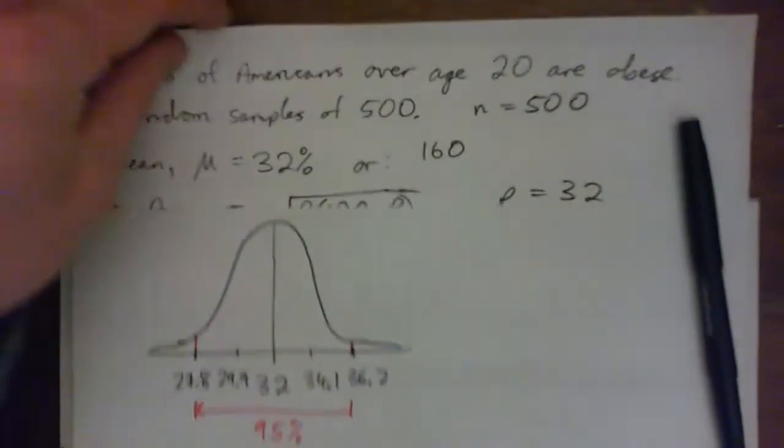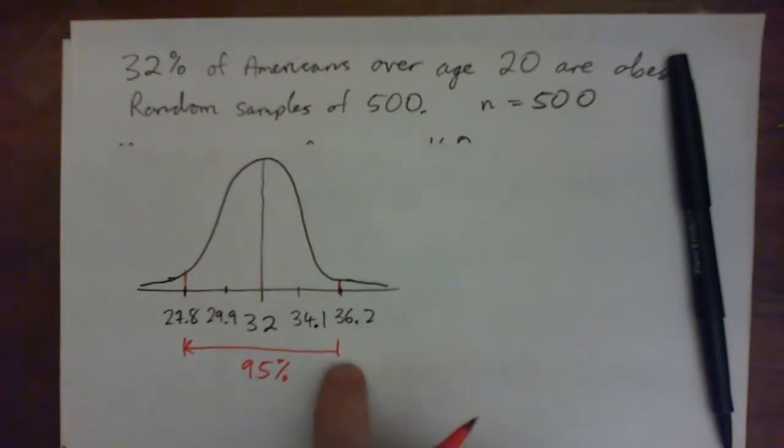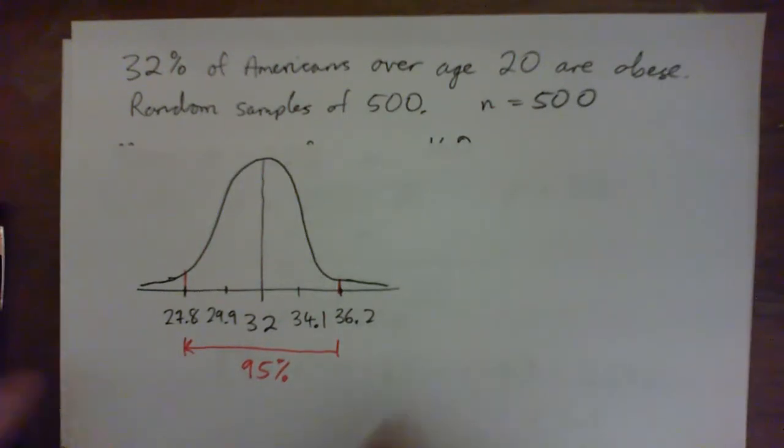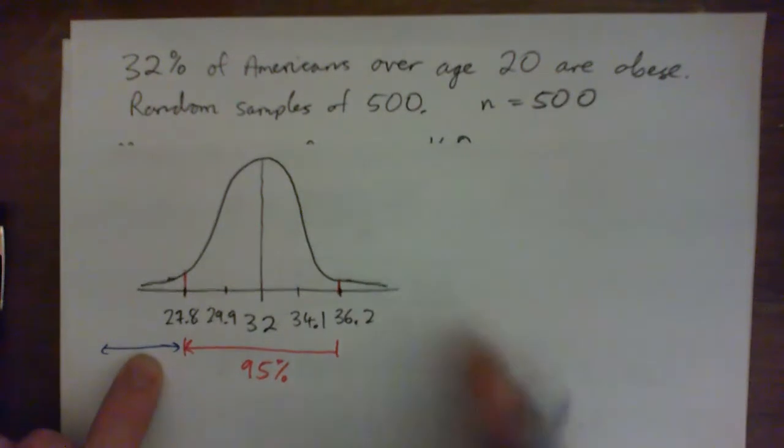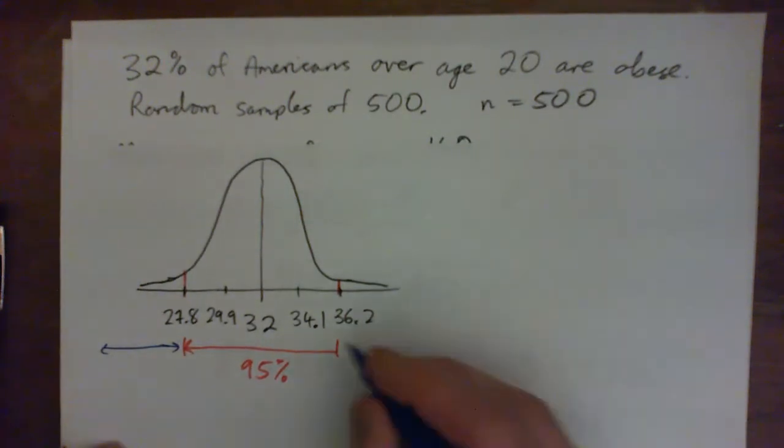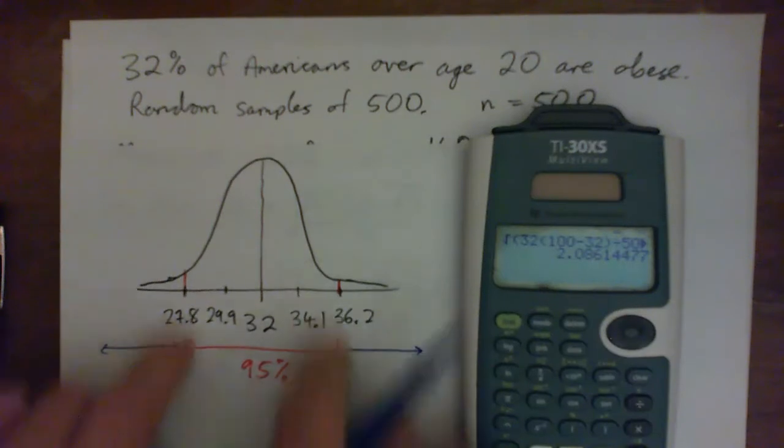But 95% of our observations, of our groups, are going to be between here and here. What does that mean in this context? If you pick random samples of 500 Americans, 95% of those groups are going to have a percentage of obese people between about 28 and 36%. So if you picked 500 people and there were less than 27.8, we would consider them unusually healthy or not obese. If their obesity level was above 36%, then we would consider that to be unusually high. But in the middle is what we expect.